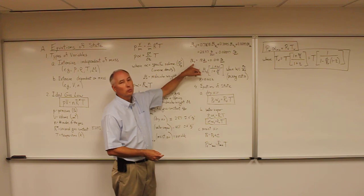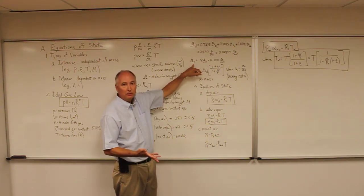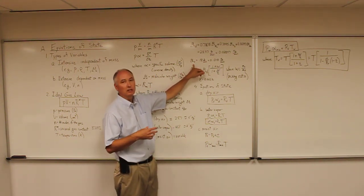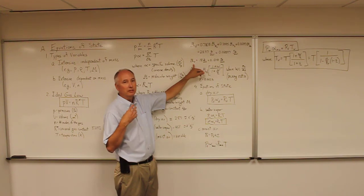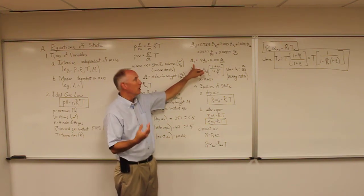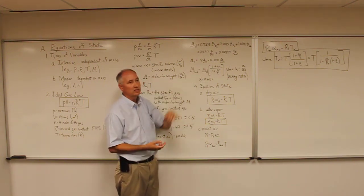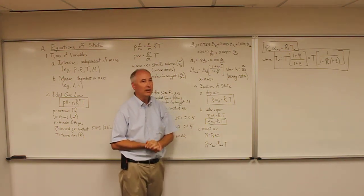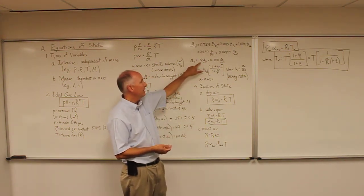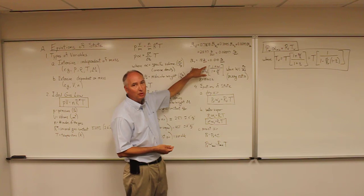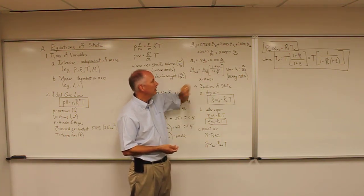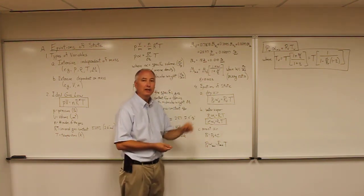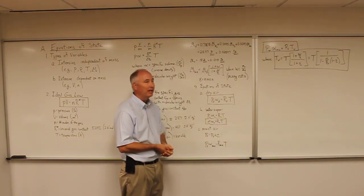The molecular weight of water vapor is simpler because it's just the molecular weight of a single molecule — 16 for oxygen and 1 each for the two hydrogens — resulting in 18 grams per mole, or 0.018 kilograms per mole.